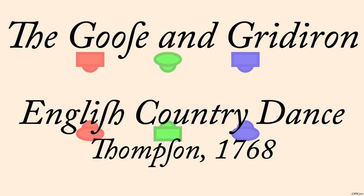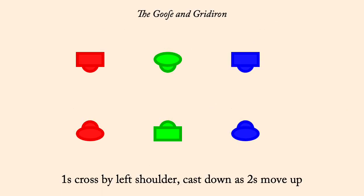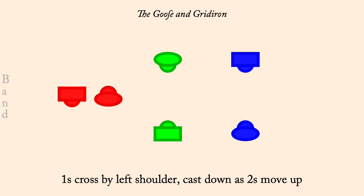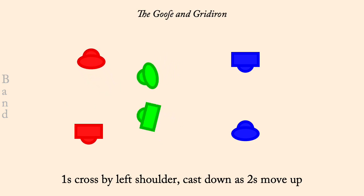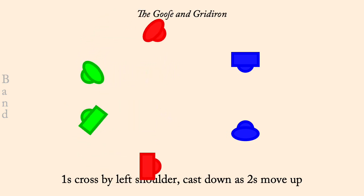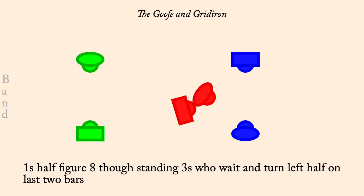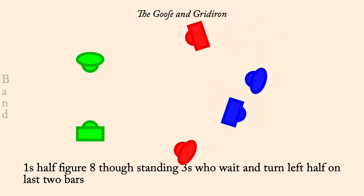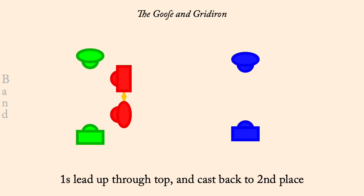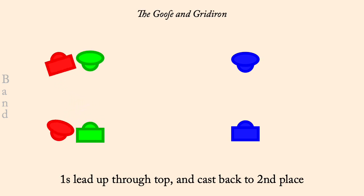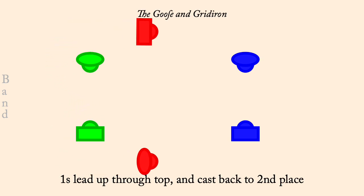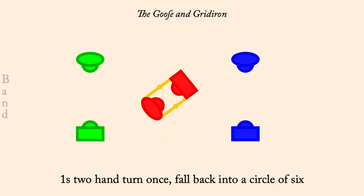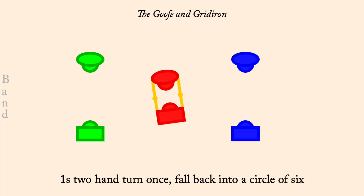The Goose and Gridiron, Thompson 1768. Ones cross by left and cast down as twos move up. Ones half figure eight around threes, who then left hand turn half. Ones lead up through twos, cast back to middle. Ones two-hand turn. Circle six and back.